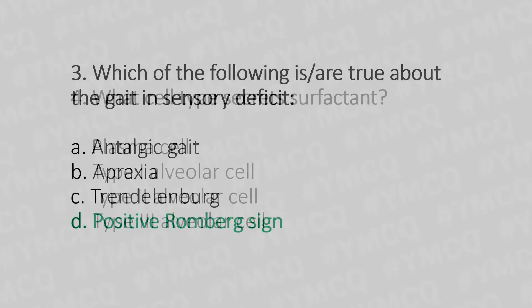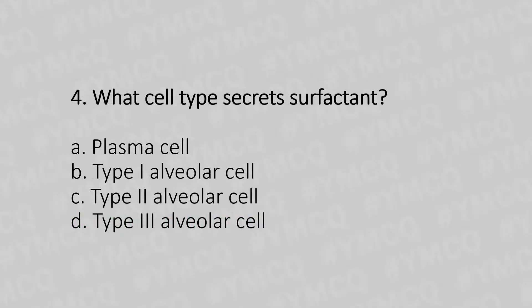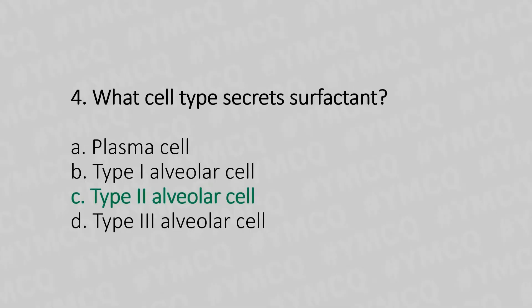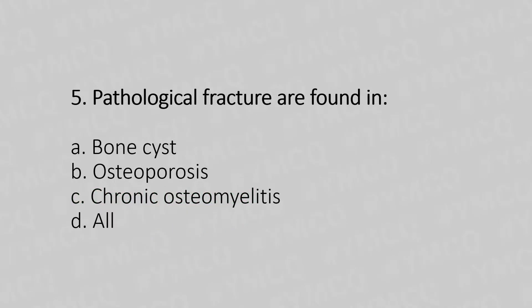Question 4: What cell type secretes surfactant? Option A: plasma cell. Option B: type 1 alveolar cell. Option C: type 2 alveolar cell. Option D: type 3 alveolar cell. The answer is option C — type 2 alveolar cell.